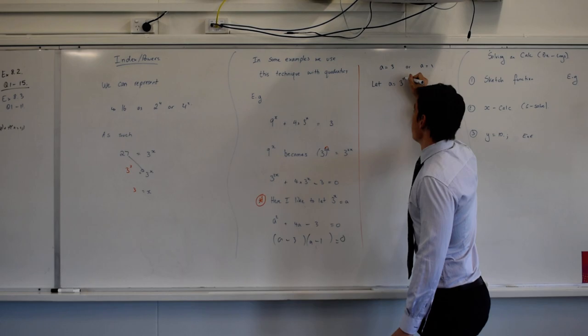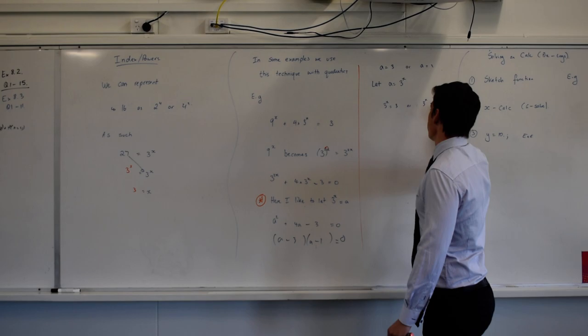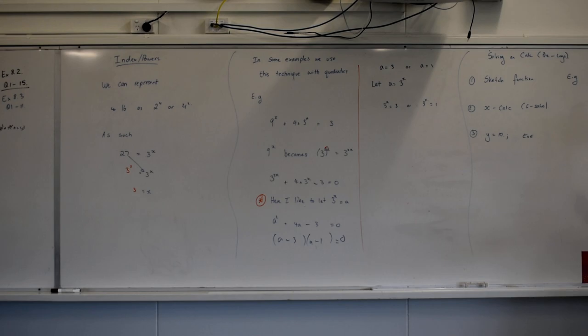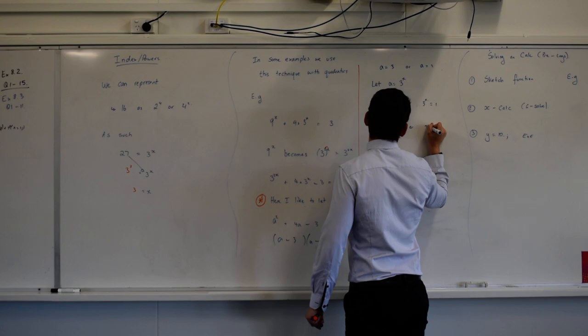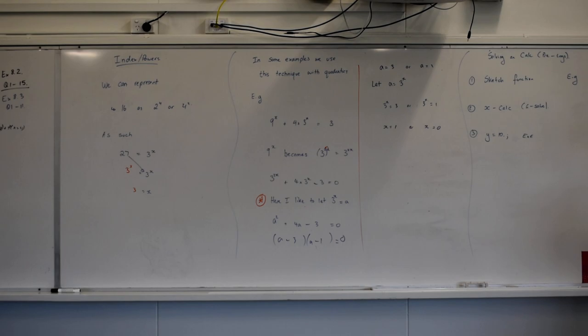Let a equal 3^x. So I've got 3^x equals 3 or 3^x equals 1. Index law time, x equals 1 or x equals 0.